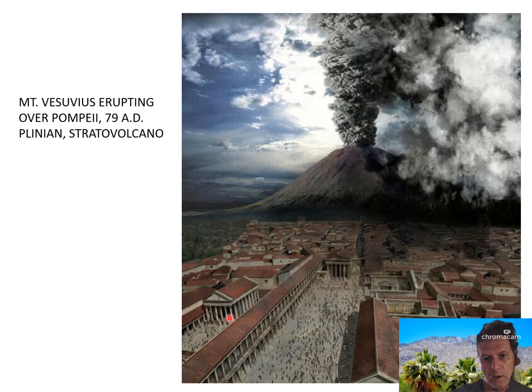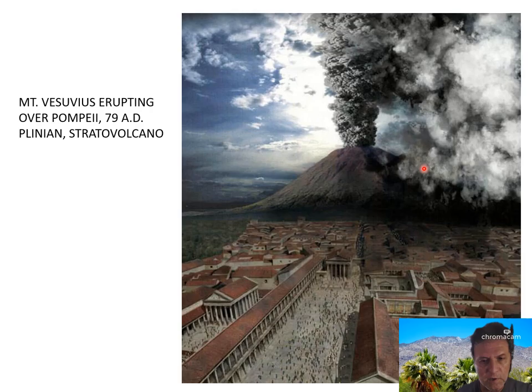Here's a repeat of the first graphic — Mount Vesuvius erupting over Pompeii and Herculaneum, a stratovolcano with a violent eruption producing a lot of ash, a lot of gas, and a lot of fragmentary material.